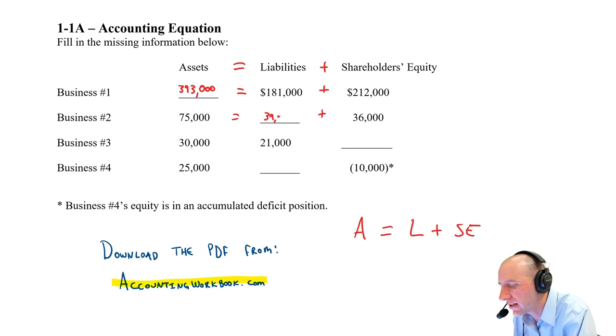The blank space is $39,000. And you can double check, right? 39 plus 36 equals 75. Yes, it works.